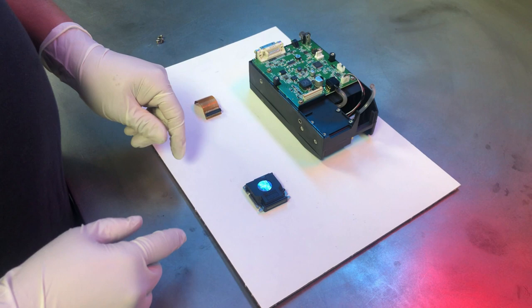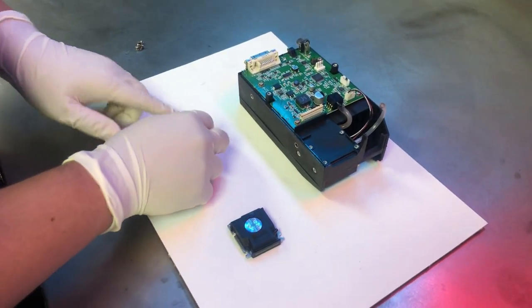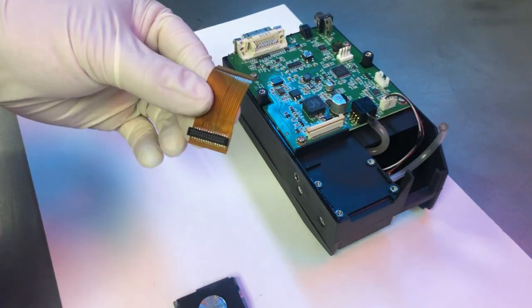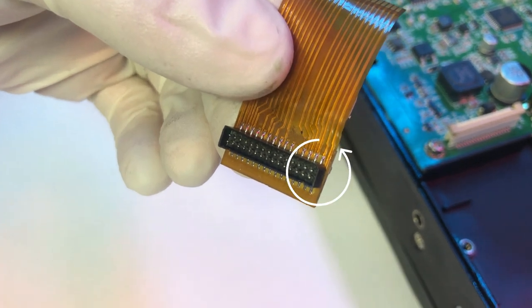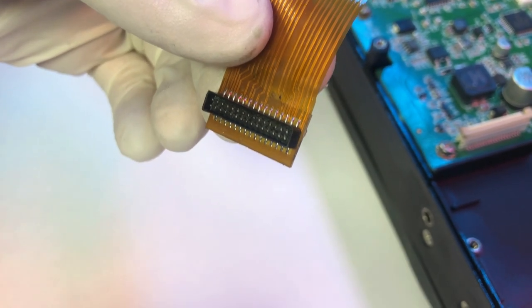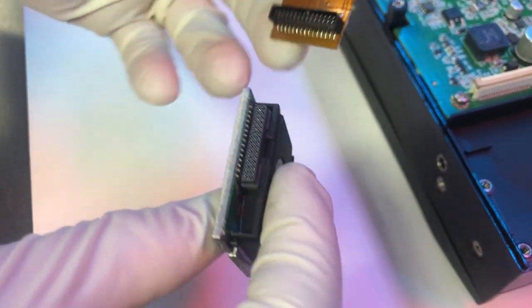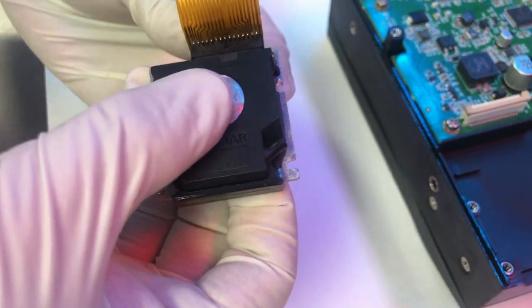Once you have your replacement print engine ready, you're going to want to reinstall the data cable. Pay close attention to the keyed corner on the side of the data cable. This will line up to a keyed corner in the back of the print engine. Line them up carefully and push.